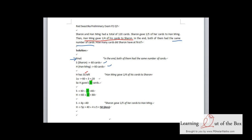So 60 divided by 3 equals 20. Han Ming gave away 20 cards.